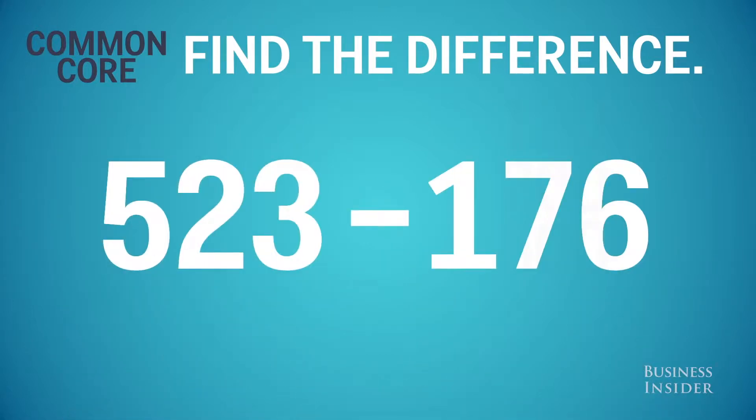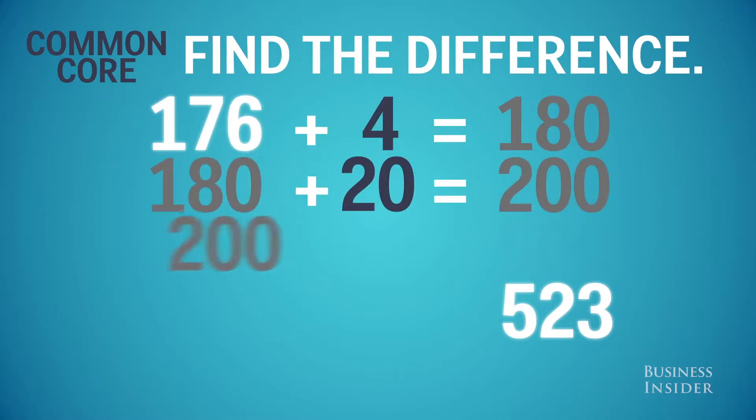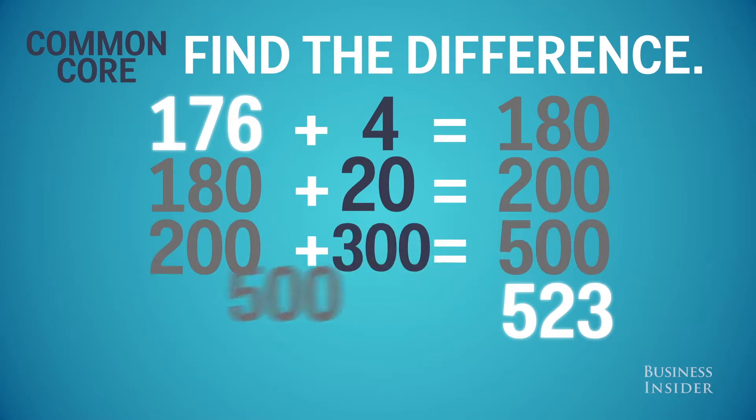The idea is to subtract the way you would count change in your head. You start with the smaller number and add up to friendly or larger numbers. Let's start with 176. We add 4 to get to 180. Plus 20 is 200. Plus 300 is 500. Plus 23 gets us to 523.